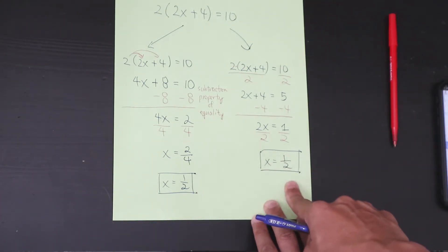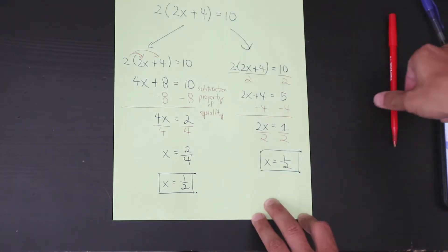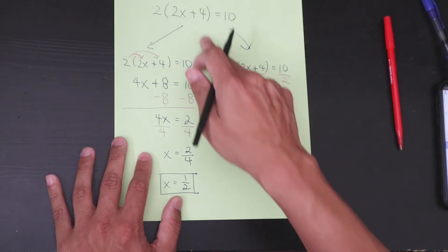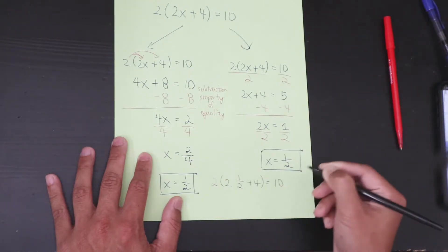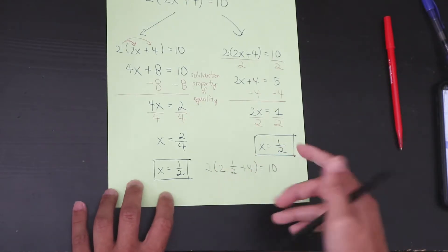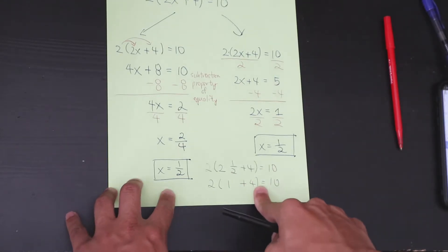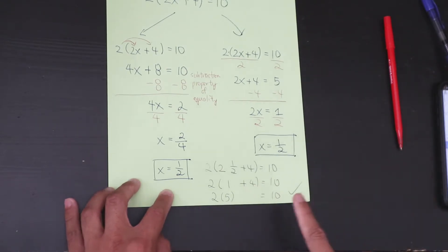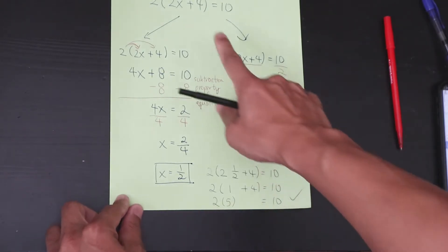If you don't believe those are correct answers, simply plug the value back into the original equation. To check: rewrite the original equation as 2 times the quantity of 2 times one half plus 4, equals 10. Half of 2 is 1, so you get 2 times 1 plus 4, equals 10. 1 plus 4 is 5, and 2 times 5 equals 10. Everything checks out.